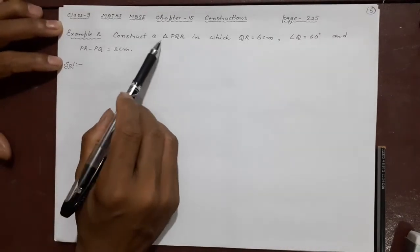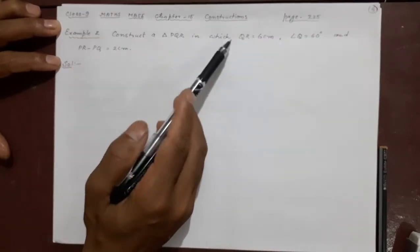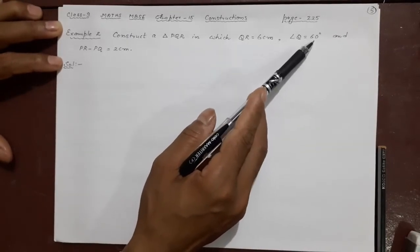The question reads like this: Construct a triangle PQR. Remember ABC is same as PQR, no need to confuse there. In which QR, just like BC, QR is 6 cm. Just like angle B, angle Q is 60 degree.